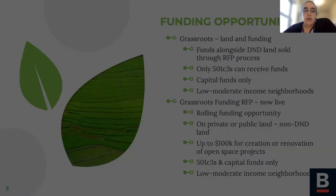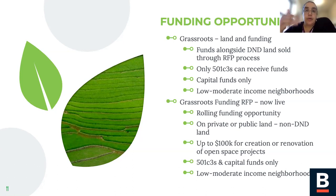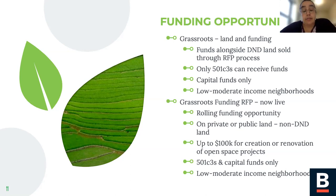Now for funding opportunities. The Grassroots Program gives funding directly in two ways. One is when we sell land, we can often offer funding to build a garden or another open space project. In the RFP, we'll say the land is available for $100 a parcel and up to $100,000 in funding is available to build the garden. That money is only available for 501(c)(3) organizations, and it can only be spent on capital funds — meaning building or renovating physical things.